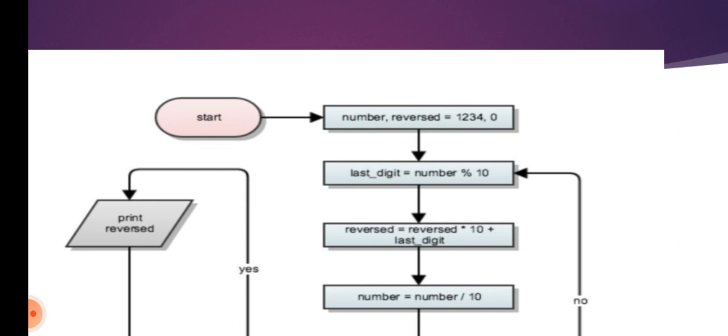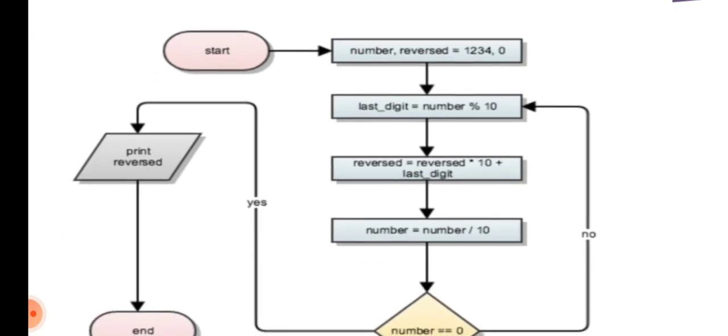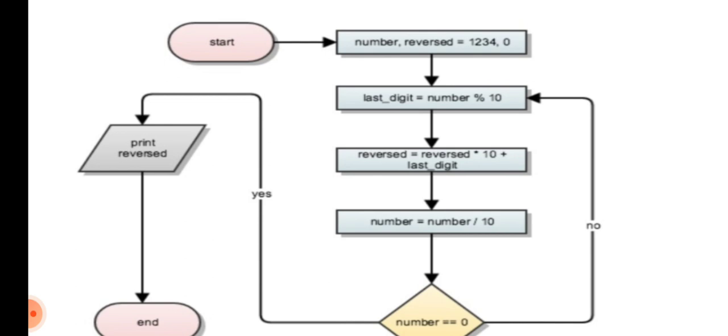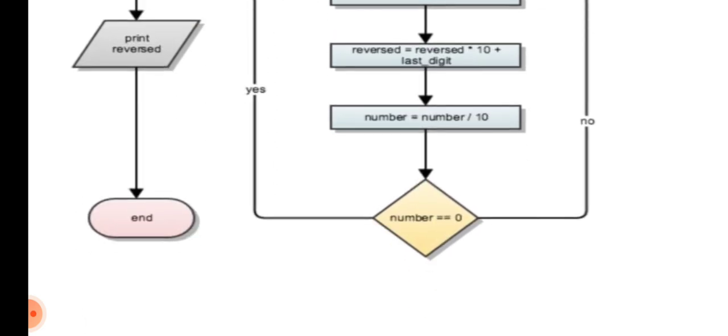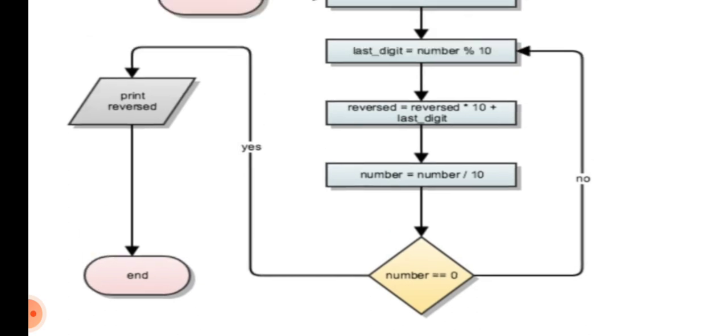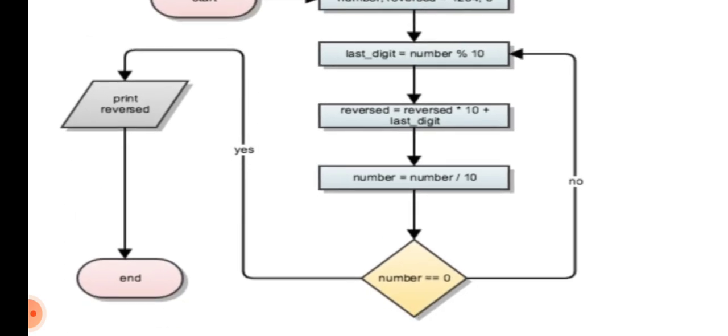The last digit of the number — as mentioned in the algorithm — the last digit equals number modulo 10. Then reverse = reverse * 10 + last digit. The instruction is: reverse = reverse * 10 + last digit of the number. The loop then continues. Next, number = number / 10. You divide the number by 10 each iteration.